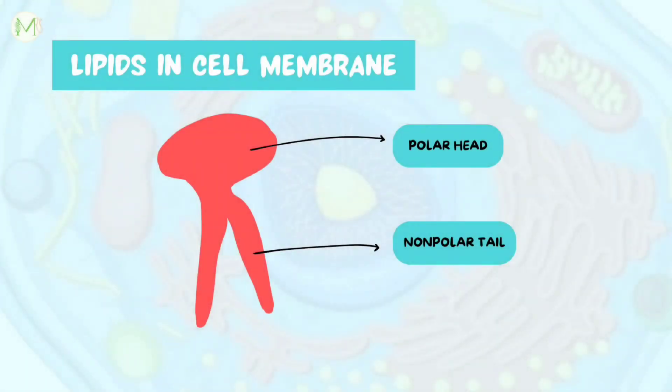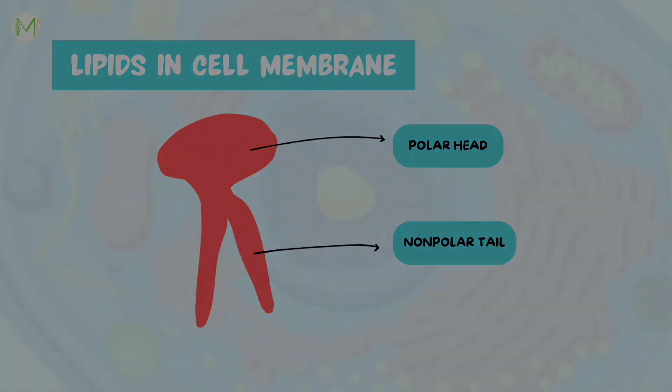Now let's discuss membrane lipids in detail. A lipid has a head and a tail, where the head is polar and the tail is nonpolar. The head region is hydrophilic whereas the tail region is hydrophobic. For this reason, we call lipids amphipathic molecules.